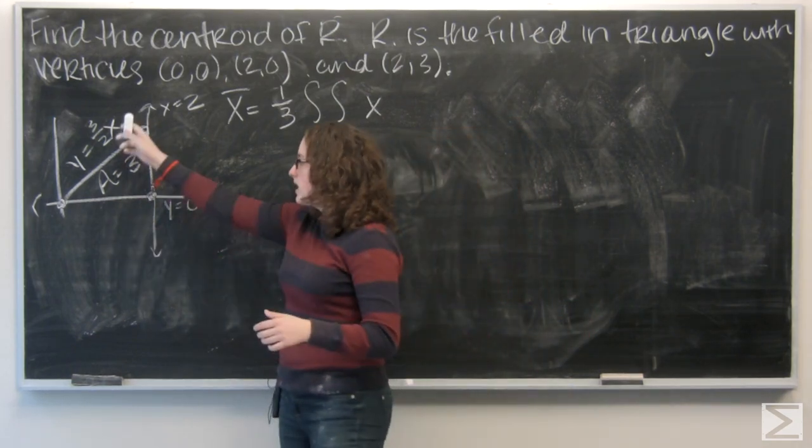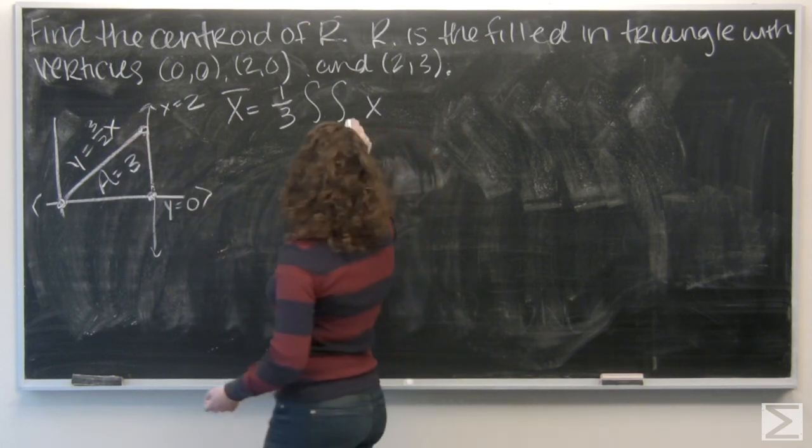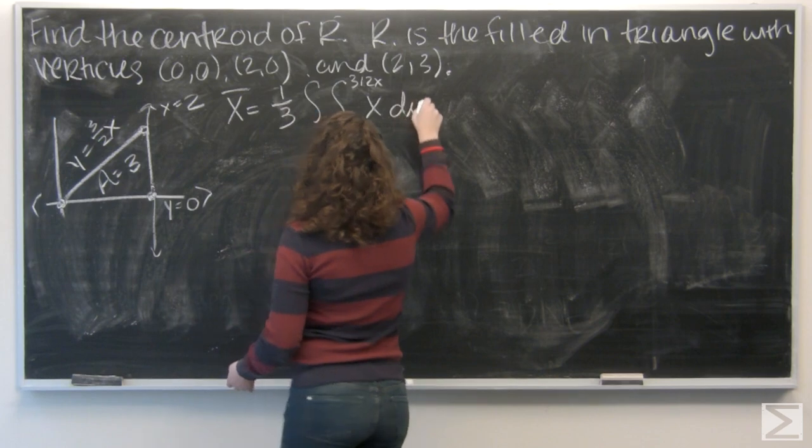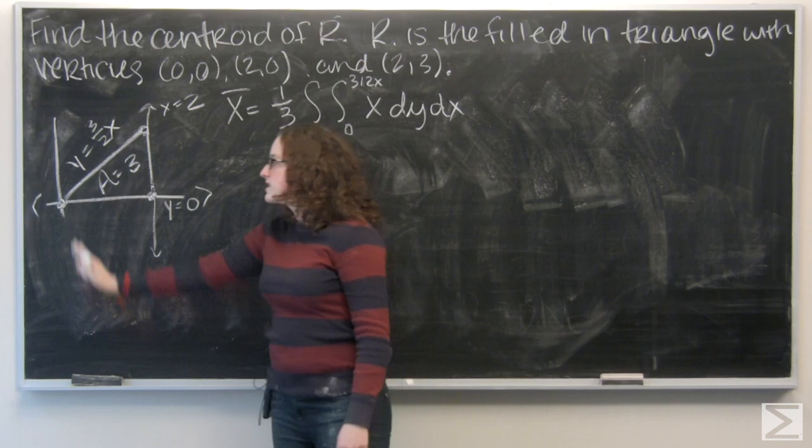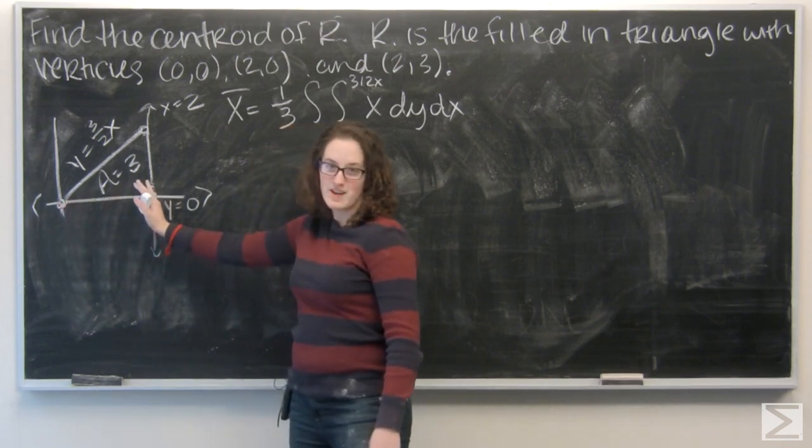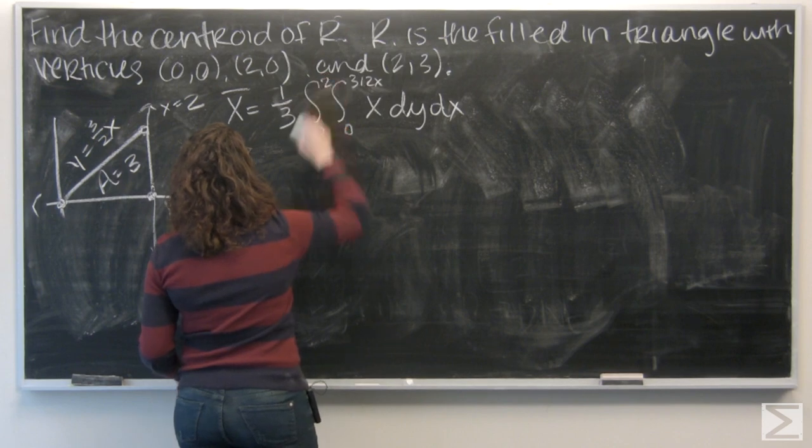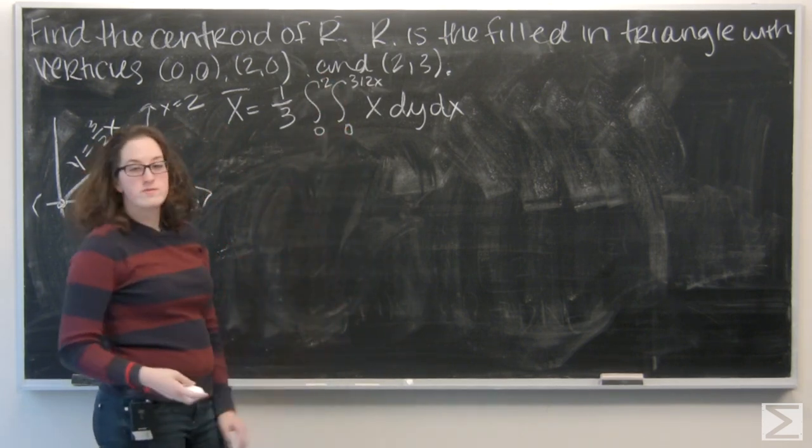So, think about going up. I go from y equals 0 to y equals 3 halves x. And then for integrating with respect to x, we're going to go x equals 0 to x equals 2. So, now I'm ready to start integrating. And let's go with respect to y first.